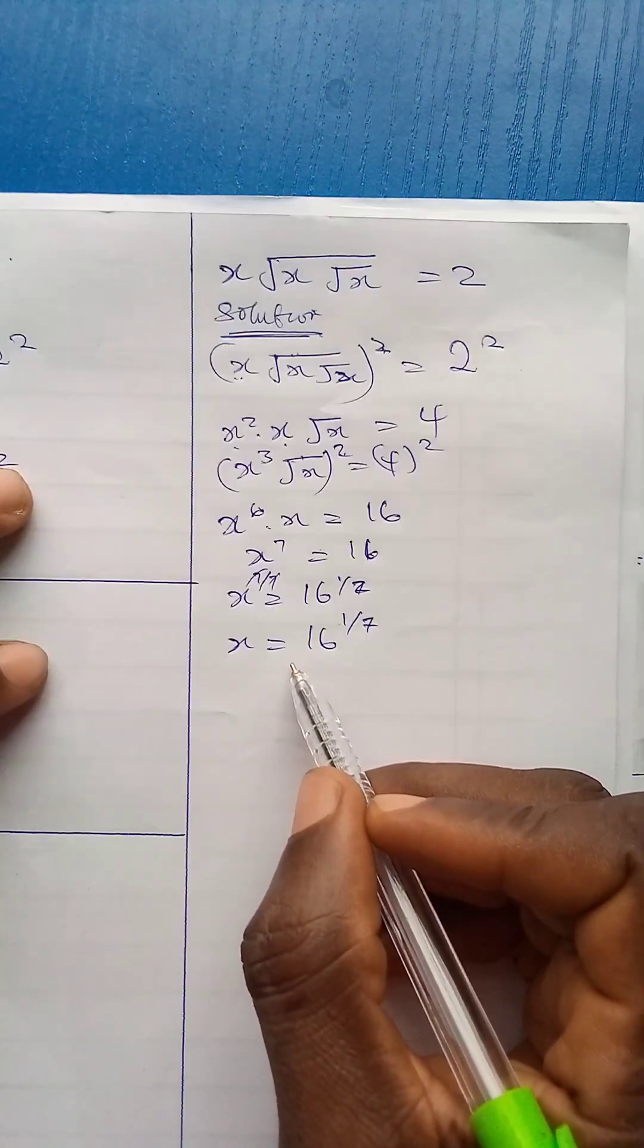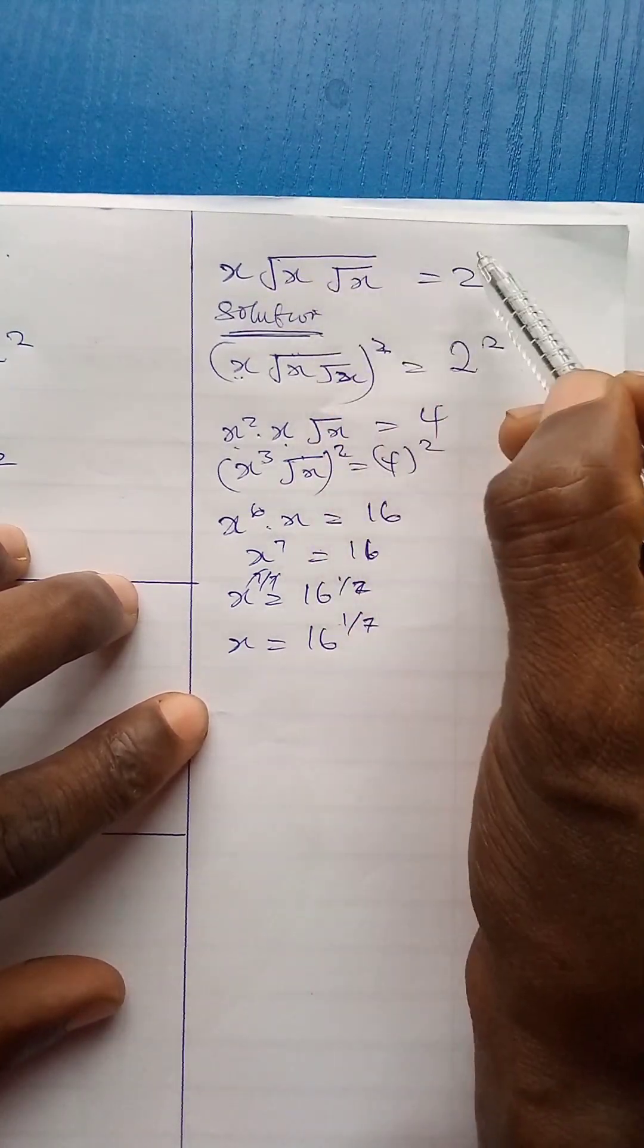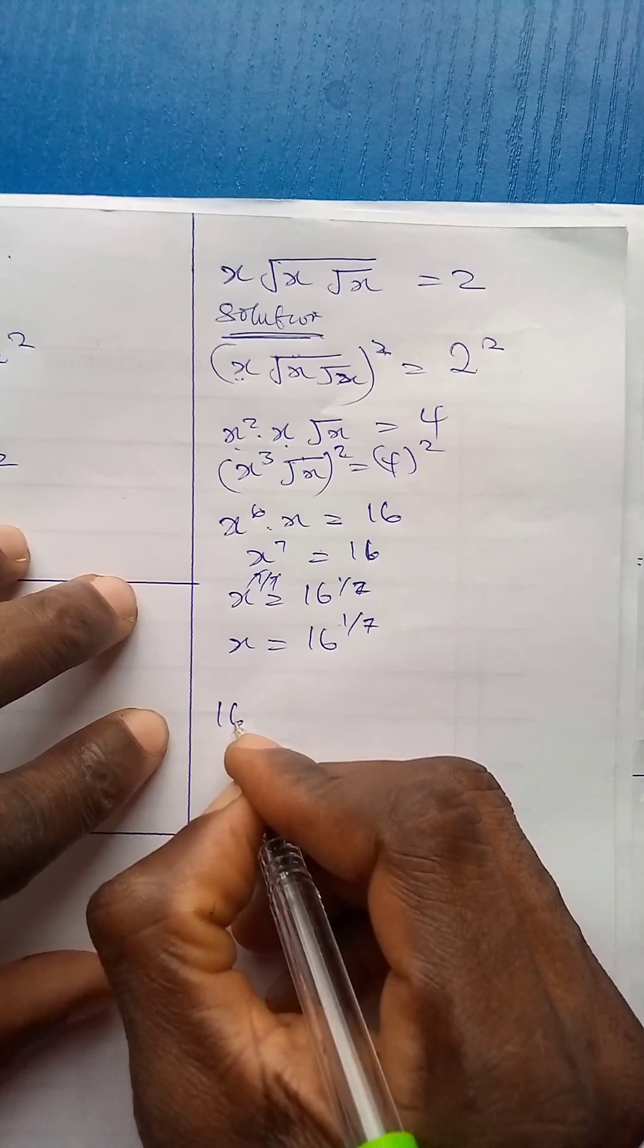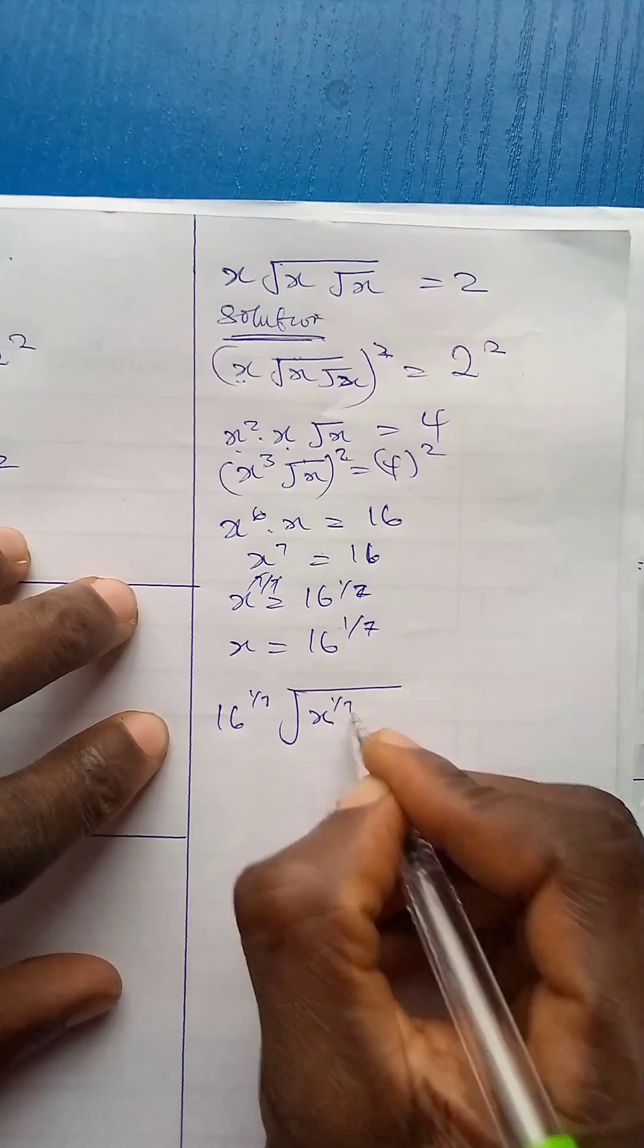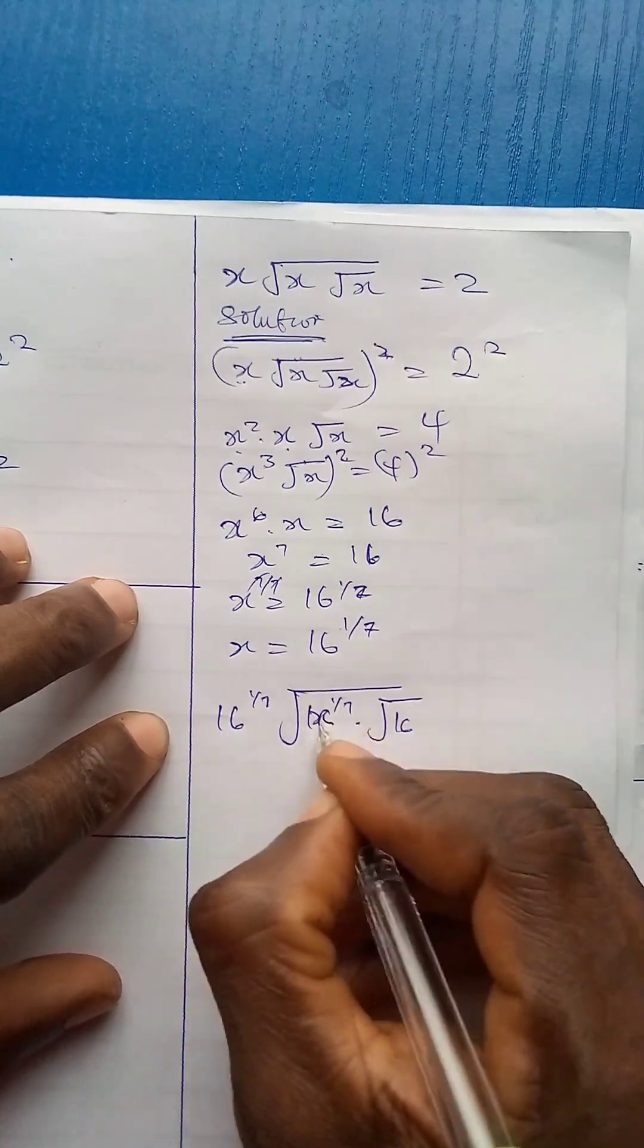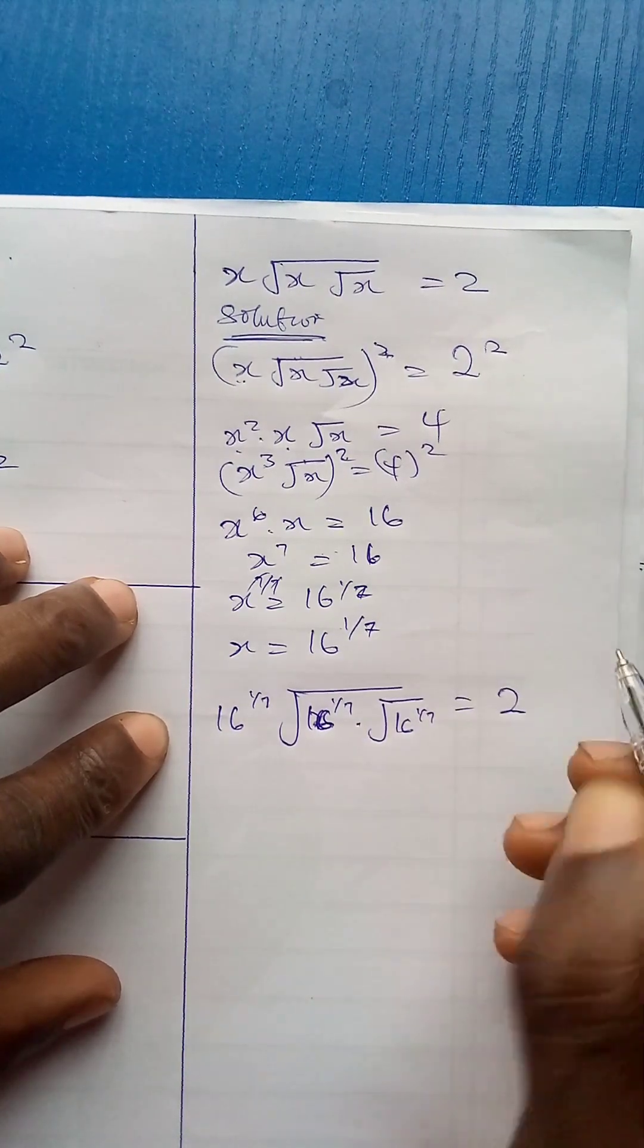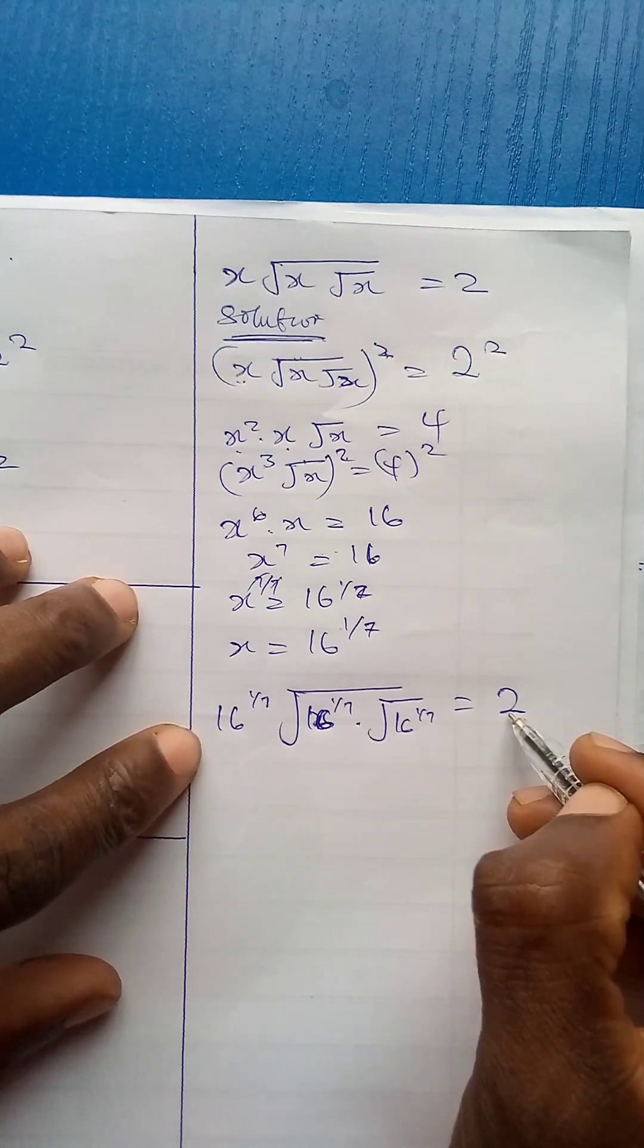Let us back substitute 16 to power 1 over 7, where we will see x in the original equation. So it becomes 16 to power 1 over 7, square root 16 to power 1 over 7, times square root 16 to power 1 over 7. This is 16 to 1 over 7 equals to 2. I want to check if this term will be equal to this term.